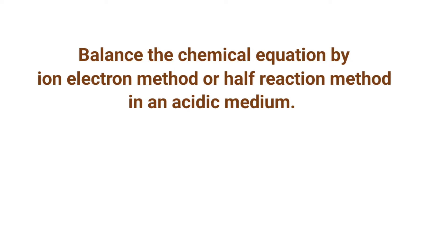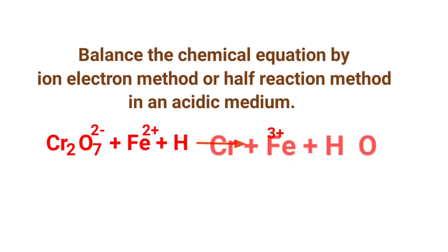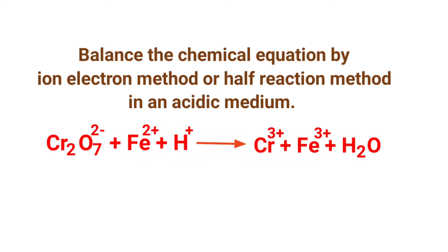Balance the chemical equation by ion electron method, or half reaction method, in an acidic medium. The equation is: dichromate ion plus ferrous ion plus hydrogen ion gives chromium 3+ ion plus ferric ion plus water.